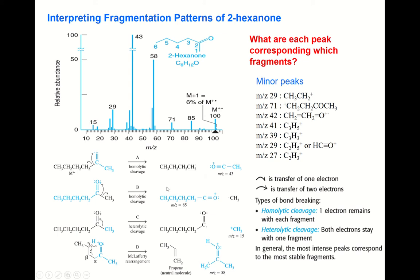Another fragmentation occurs when a different carbon-carbon bond is broken. This gives a positive ion with mass number 85, which is detected. At the same time, a neutral radical is formed on the other side, which is not an ion and therefore not detected.